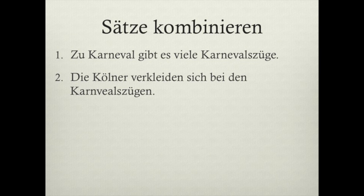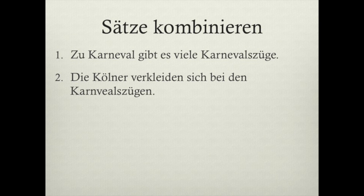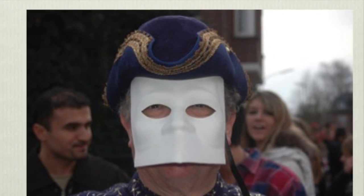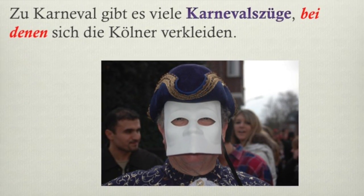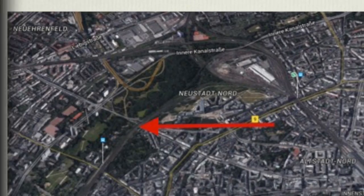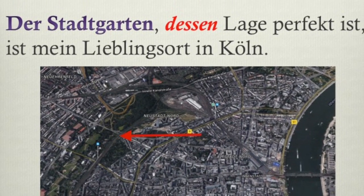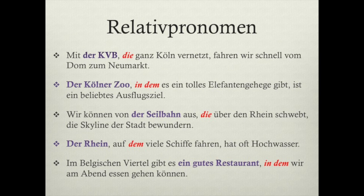Let's practice a little more. Combine: 'Zu Karneval gibt es viele Karnevalszüge.' and 'Die Kölner verkleiden sich bei den Karnevalszügen.' The result: 'Zu Karneval gibt es viele Karnevalszüge, bei denen sich die Kölner verkleiden.' Now combine: 'Der Stadtgarten ist mein Lieblingsort in Köln.' and 'Seine Lage ist perfekt.' Answer: 'Der Stadtgarten, dessen Lage perfekt ist, ist mein Lieblingsort in Köln.' And last, fill in the blanks on your own — pause the video, then check the answers. That's all I have for you about Relativsätze and Relativpronomen.